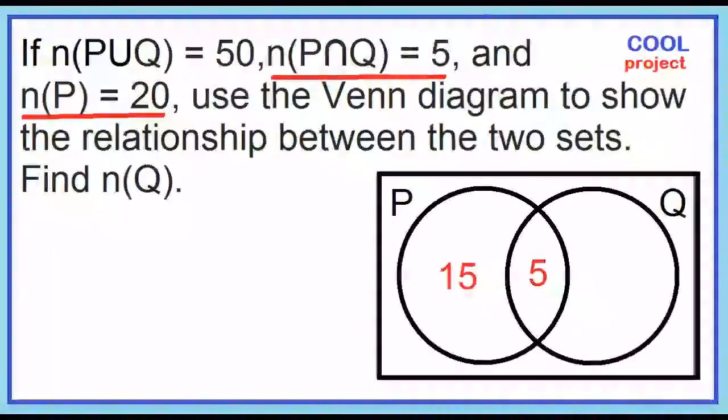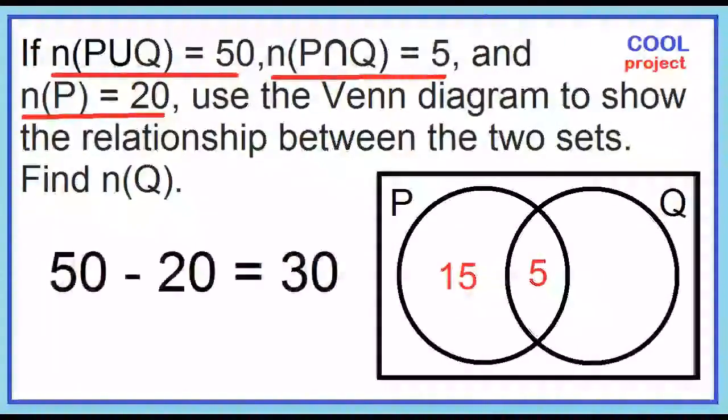Now we can find the remaining number of elements in set Q. The cardinality of P union Q is 50 minus the cardinality of P which is 20, equals 30.